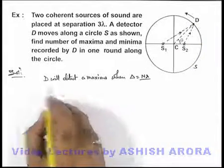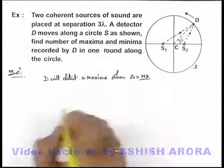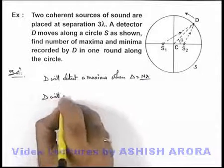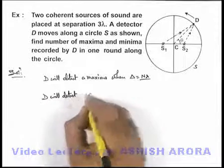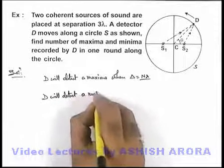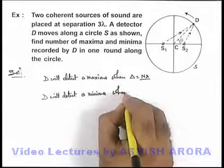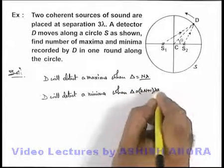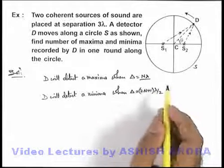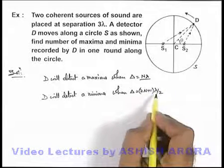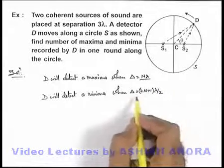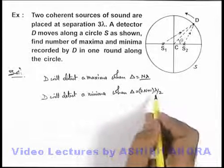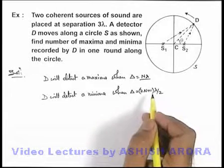In this situation, it will detect a maxima when delta is n lambda. And D will detect a minima when delta is equal to (2n+1) lambda by 2. At all path differences which are odd multiples of lambda by 2, destructive interference takes place and minimum sound will be detected at the point of interference.